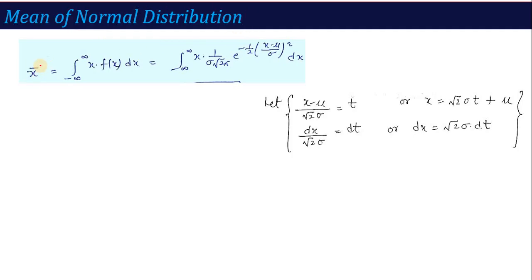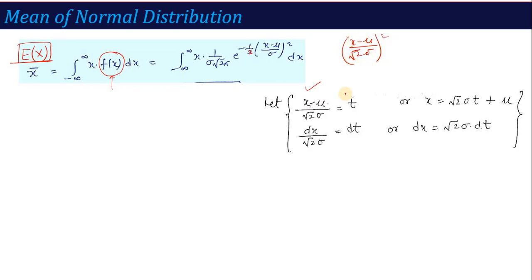For the mean of normal distribution, we calculate x-bar. If you remember from the previous lecture, when we have a continuous PDF function given, the mean is calculated as the integral from minus infinity to infinity of x · f(x) dx. So according to this formula, with f(x) = (1/σ√(2π)) · e^(−½·((x−μ)/σ)²) dx, we will solve this. Let t = (x − μ) / (√2 · σ), so that the squared term becomes t². Then x = √2·σ·t + μ, and differentiating gives dx = √2·σ · dt.